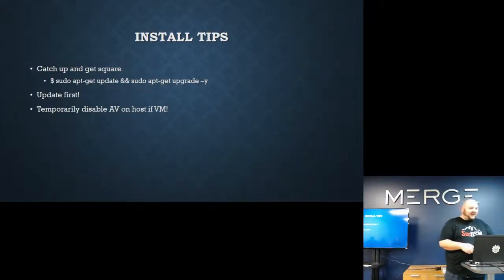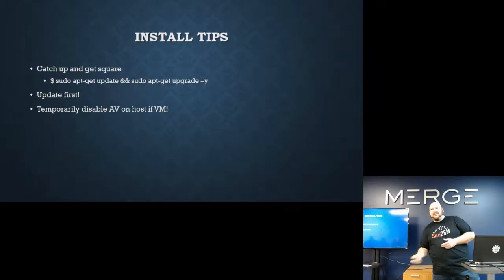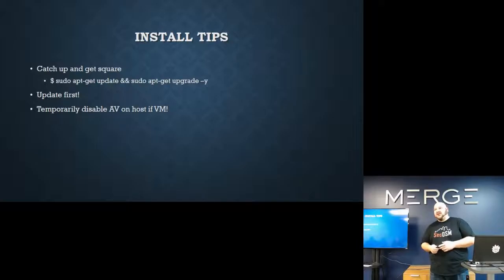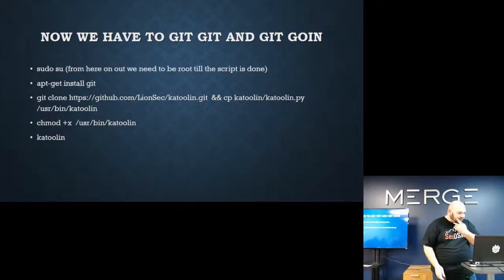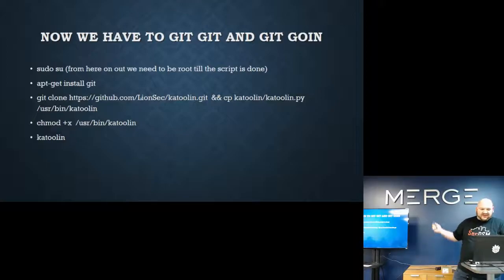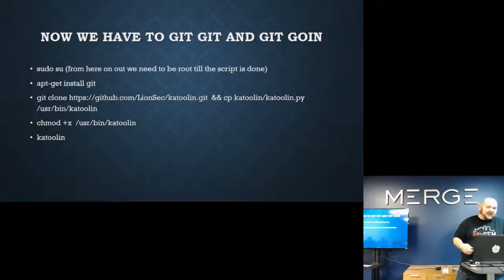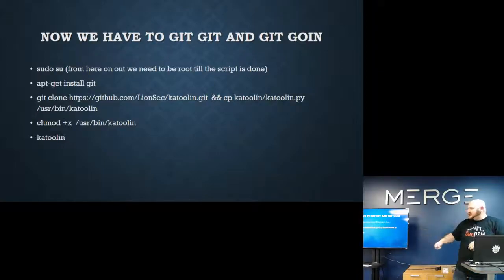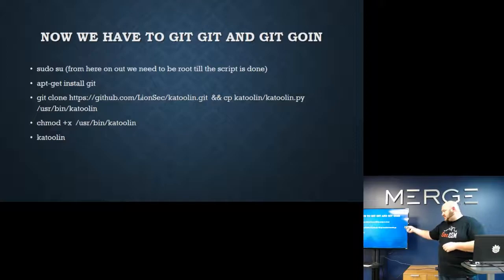Install tips: before doing new installs on your daily driver, be sure to update. If you're doing this in a VM host for testing, disable your AV because installing Kali-based stuff will trigger and block things. The basic install commands are: sudo su to drop into super user, then apt-get install git, git clone from his GitHub repository, copy it into /usr/bin/katoolin, chmod +x to make it executable, then launch the tool.